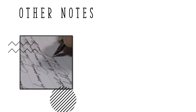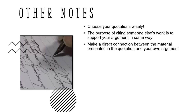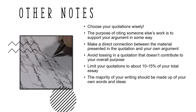Here are a few final notes about using quotations within your writing. Choose your quotations wisely — remember that the purpose of citing someone else's work is to support your own argument in some way. This is why it's important to include an explanation of the quotation and make a direct connection between the material in the quotation and your own argument. Avoid simply tossing in a quotation that doesn't contribute to your overall purpose just to meet the minimum source requirement. For similar reasons, you should limit your quotations to about 10 to 15% of your total essay. The majority of your writing should be made up of your own words and ideas.